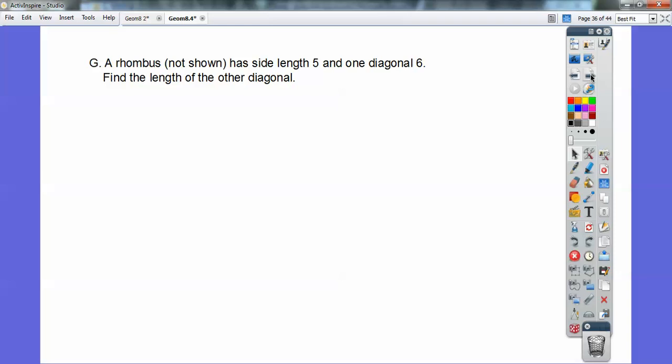Alright, one more. Okay, a rhombus, not shown, has a side length 5 and one diagonal 6. Find the length of the other diagonal. Well, let's draw that rhombus right there. There's the side length 5. It's a rhombus, so all sides are equal. And one of the diagonals is 6. So before I draw this other diagonal going up here, it's going to cut that 6 in half. It's going to bisect it and make it 3 and 3.